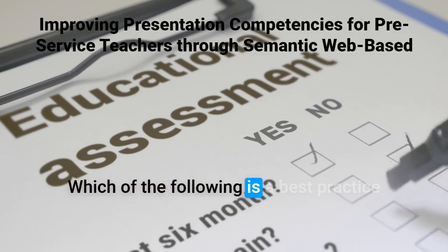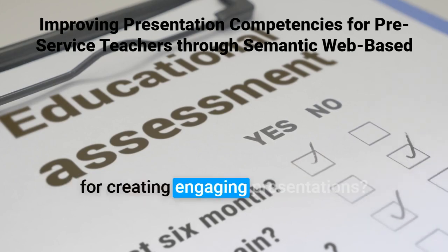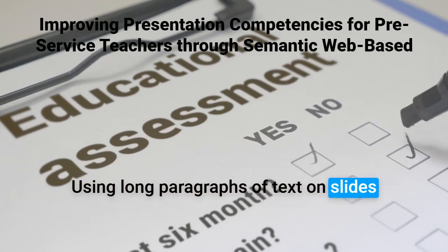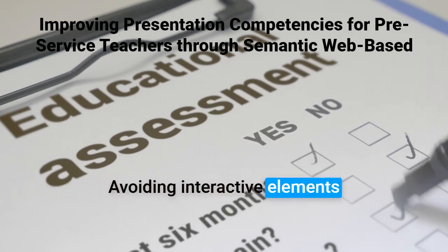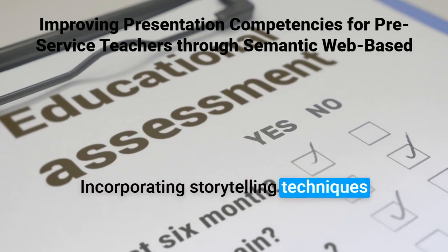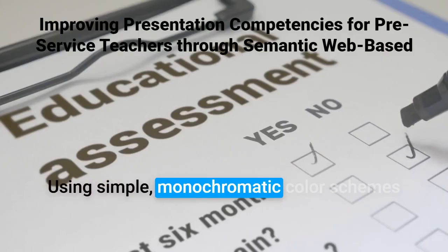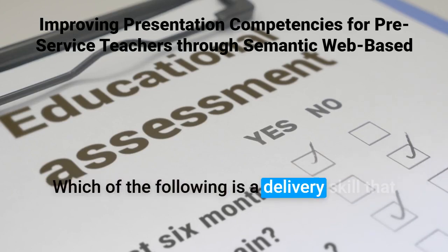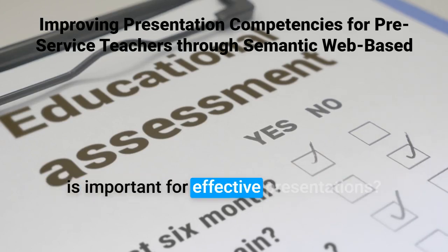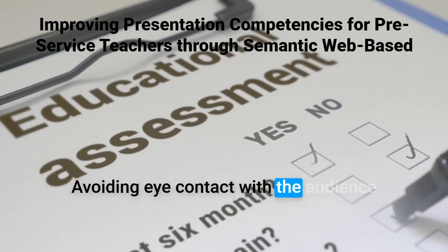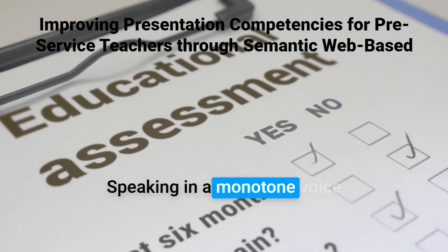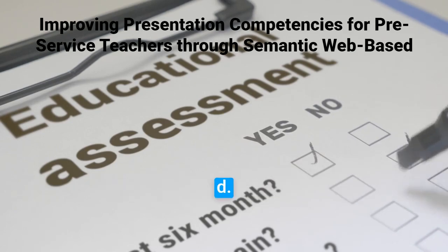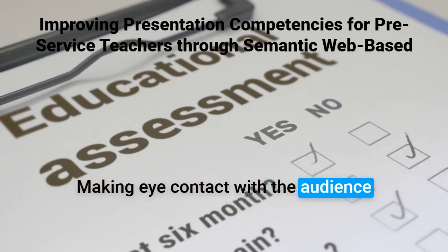Question 3: Which of the following is a best practice for creating engaging presentations? A. Using long paragraphs of text on slides. B. Avoiding interactive elements. C. Incorporating storytelling techniques. D. Using simple, monochromatic color schemes. Question 4: Which of the following is a delivery skill that is important for effective presentations? A. Avoiding eye contact with the audience. B. Speaking in a monotone voice. C. Using distracting hand gestures. D. Making eye contact with the audience.